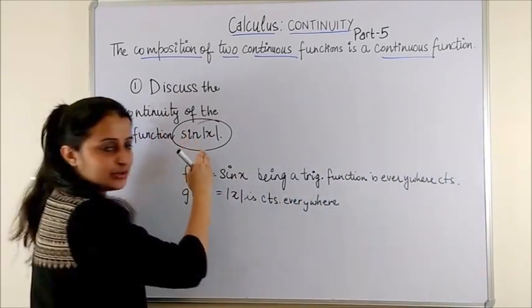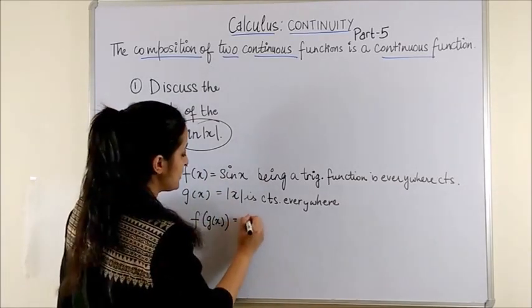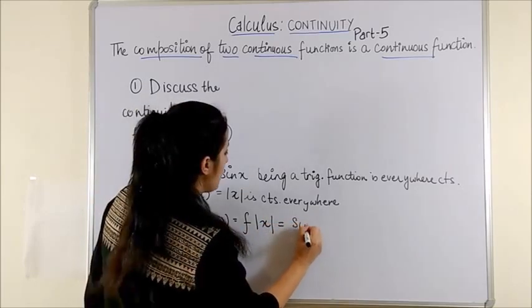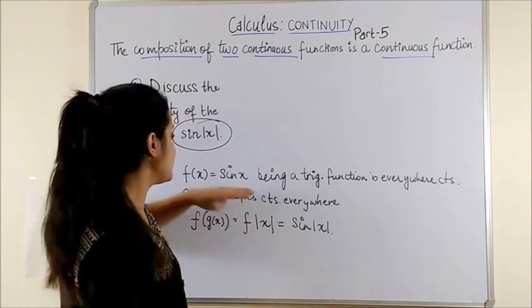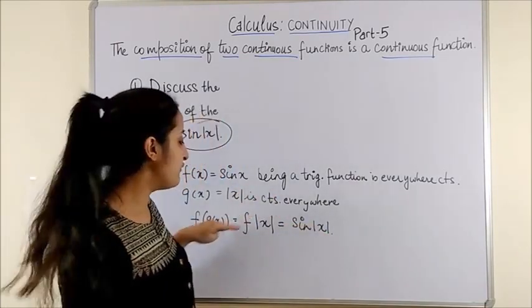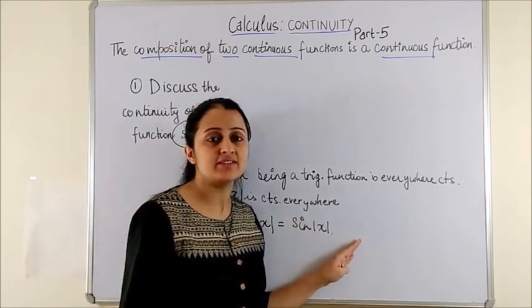In order to create the composition, we will take the function f of g which is f of mod x which is sin of mod x. We would say according to the given result that since fx and gx are already continuous, therefore their composition which gives us sin mod x is continuous as well.